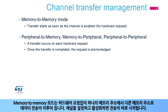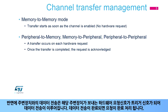Memory-to-memory mode allows transfers from one address location to another without a hardware request. Once the channel is configured and enabled, the transfer starts immediately. When data is transferred from or to a peripheral, the hardware request coming from the selected peripheral is used to trigger the data transfer. Once the transfer is completed, the request is acknowledged.